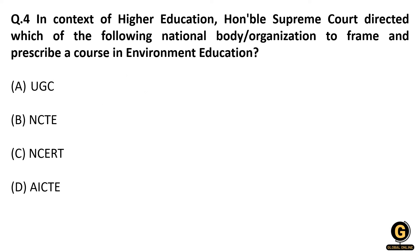The next question is: in the context of higher education, the Honorable Supreme Court has directed which national body to frame and prescribe a course in environment education? The Supreme Court has advised UGC to frame a six-module environmental course for all undergraduate students in universities and colleges affiliated to UGC. Remember: the answer is UGC. NCTE is National Council for Teacher Education, NCERT we all know, and AICTE looks after technical education — but the direction for the six-module environmental course for first-year undergraduate students was given to UGC.